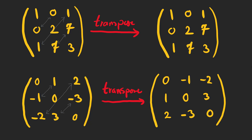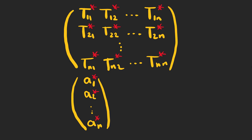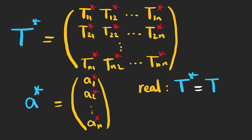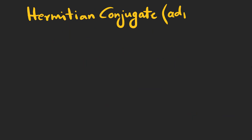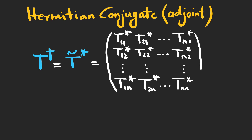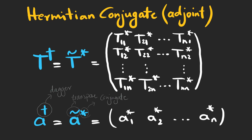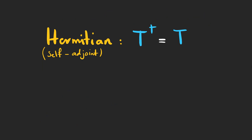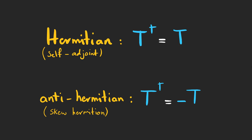Pay attention to how each element corresponds to its mirror element with respect to the diagonal. If we change each element to its complex conjugate, the result is the conjugate of the matrix, denoted T* and A*. A matrix is real if all its elements are real, and imaginary if all elements are imaginary. The Hermitian conjugate or adjoint is the transpose conjugate, denoted by a dagger — interchange rows and columns and replace elements with their complex conjugates. A matrix is Hermitian if its adjoint equals itself, and anti-Hermitian if its Hermitian conjugate equals its negative.